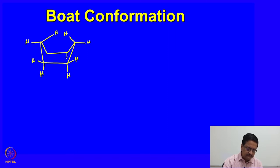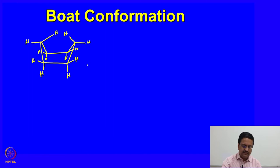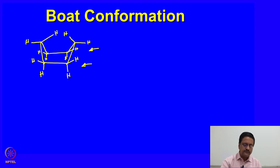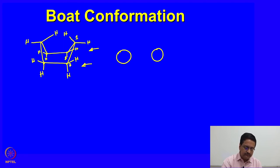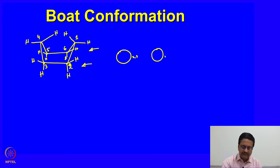Now if we try to draw this molecule in the boat conformation in the Newman projection, how should it look? We should see from the side of these two parallel bonds and then try to draw the Newman projection. What we draw here are the two carbon atoms through which we are looking. If we try to number them as 1, 2, 3, 4, 5, and 6 — the carbon here is carbon number 2, the back carbon is 3, the back carbon is 5, and the front carbon is 6.